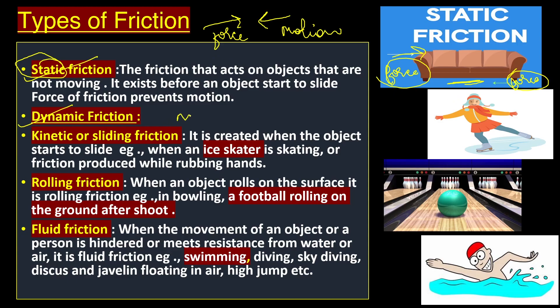Dynamic friction means there is movement. The first type is kinetic or sliding friction — for example in ice skating, both surfaces slide over each other, so sliding friction applies. Rolling friction occurs when a ball rolls over a surface, like in bowling or when a football rolls along the ground.